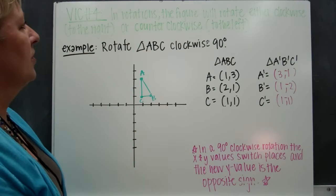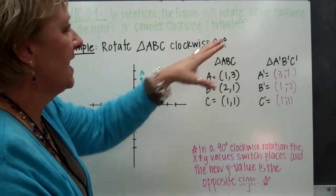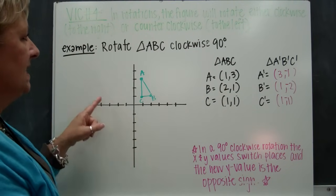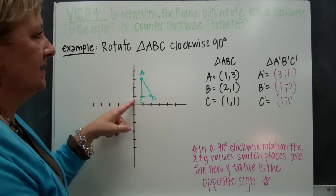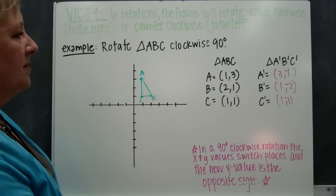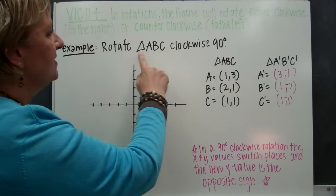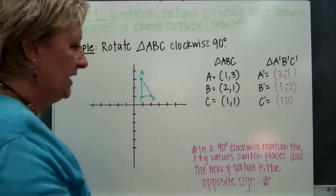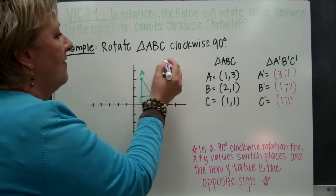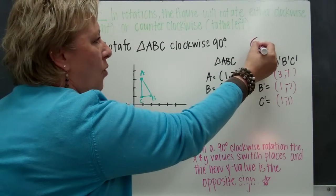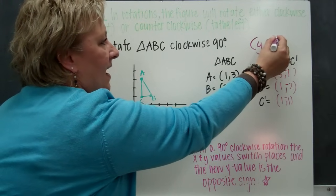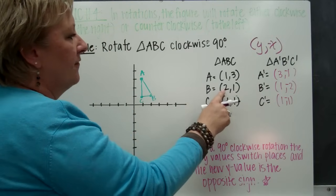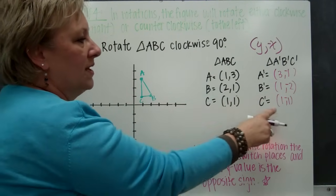Very important concept number four. In rotations, the figure will rotate either clockwise, meaning to the right, or counterclockwise, meaning to the left. In this case, we're going to rotate triangle ABC 90 degrees. When doing this, I'm going to flip my X value with my Y value, and the X value becomes negative. So for point (one, three), it becomes (three, negative one). For (two, one), it becomes (one, negative two). And for (one, one), it becomes (one, negative one).